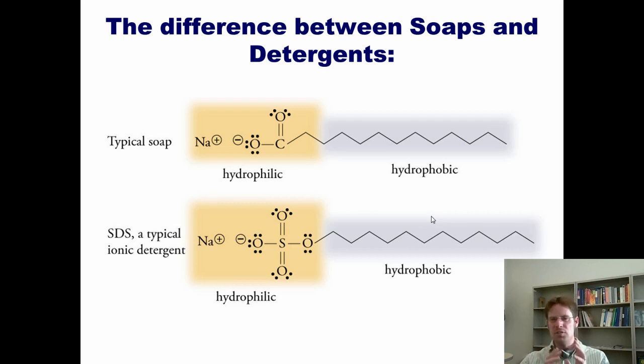I want to teach you the difference between soaps and detergents. A typical soap has a carboxylate or a sodium carboxylate head. You can have soaps with different counterions other than sodium. Detergents have sulfonate anionic heads instead. They also can have alternative counterions instead of sodium, such as potassium or magnesium or calcium. But this structurally is really the only difference between soaps and detergents.